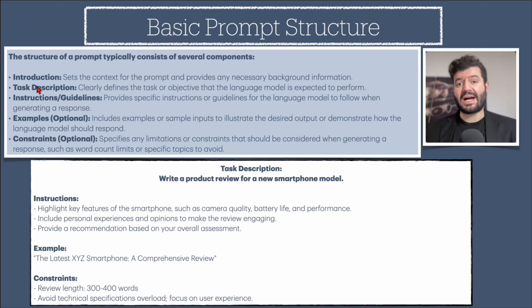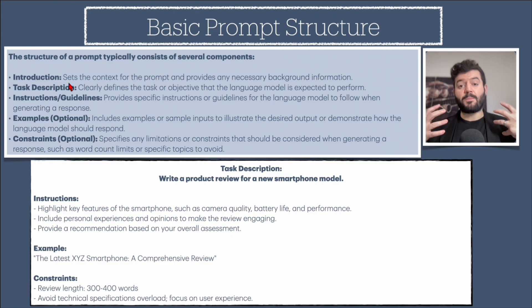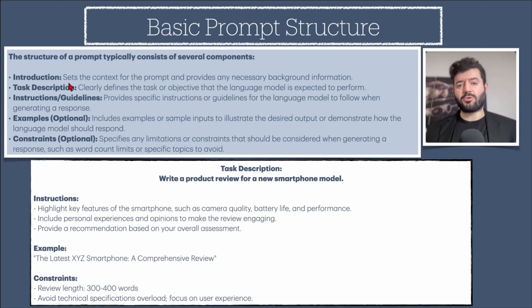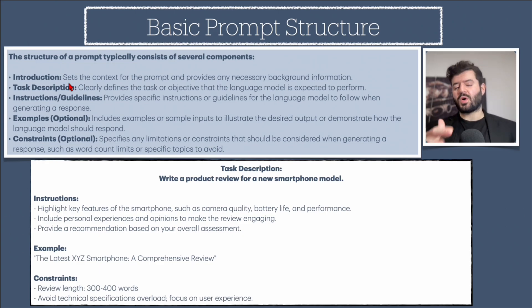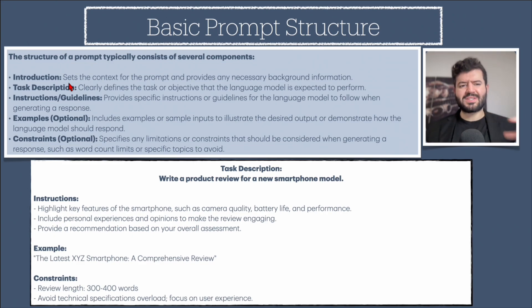First, we have the introduction — something you pass on to ChatGPT in the form of text, an idea, a request, a piece of information, an order, or a command. For example, 'I would like to do so and so,' or 'Take a look at this text which I need you to do so and so with.' This is the basic introduction component.